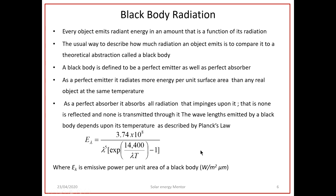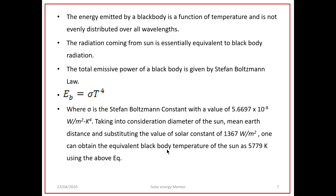Planck's equation states: E_λ = (3.74 × 10⁸) / [λ⁵ × (exp(14400 / λT) − 1)], where E_λ is the emissive power per unit area of a black body in W/m²·μm, λ is the wavelength of emission in micrometers, and T is the absolute temperature of the black body. This equation gives us the emissive power per unit area of a black body. The energy emitted is a function of temperature and is not evenly distributed over all wavelengths.